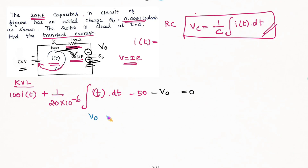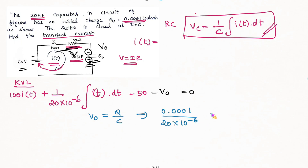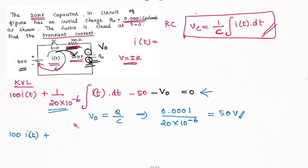Now let's find the V0 value. Using the voltage across capacitor formula: V0 equals Q divided by C. Q is 0.0001 and the capacitor value is 20uF, that is 20 into 10 to the power minus 6. Putting this in the calculator, the answer is 50V. So we substitute V0 equal to 50V into the formula.